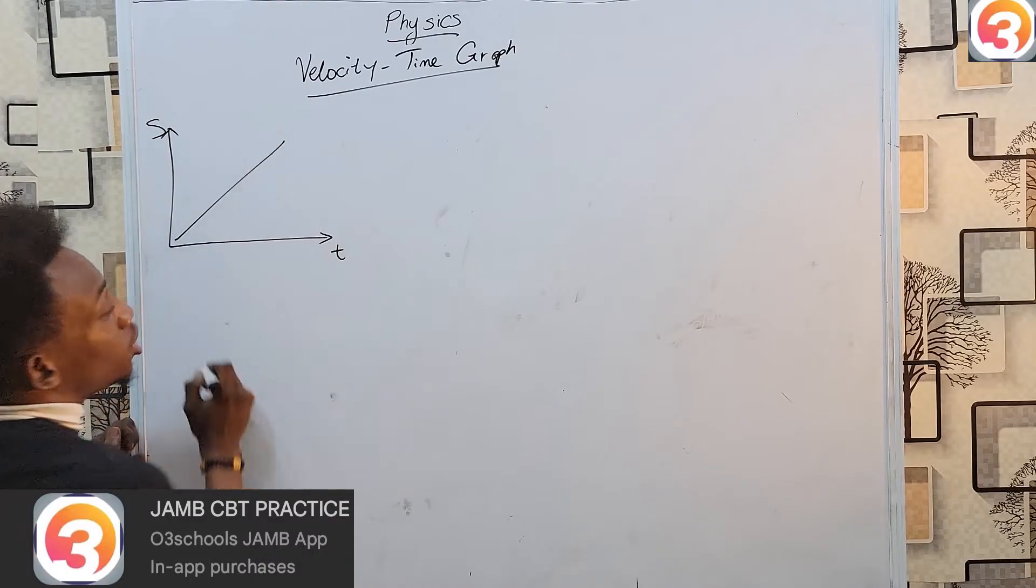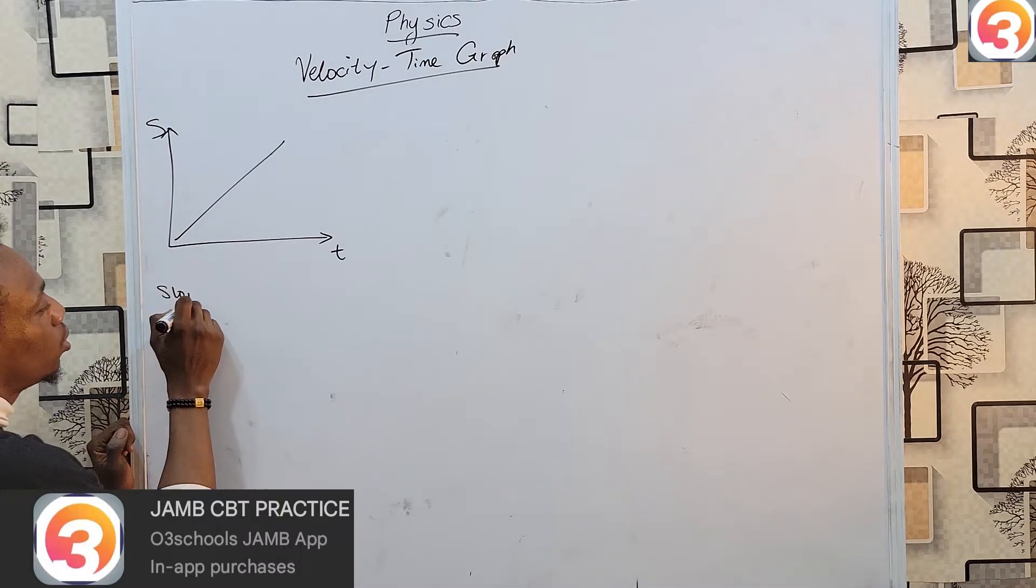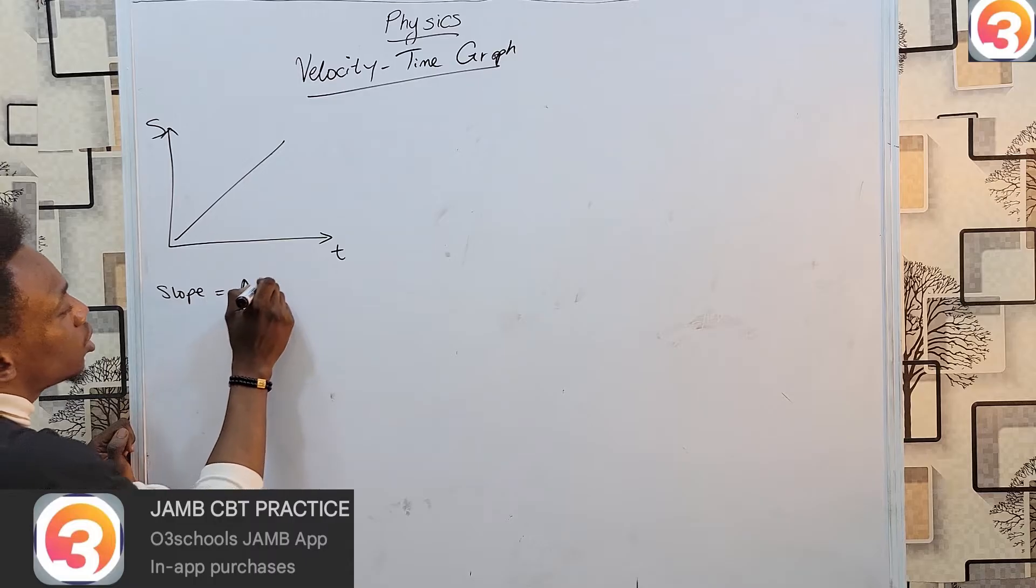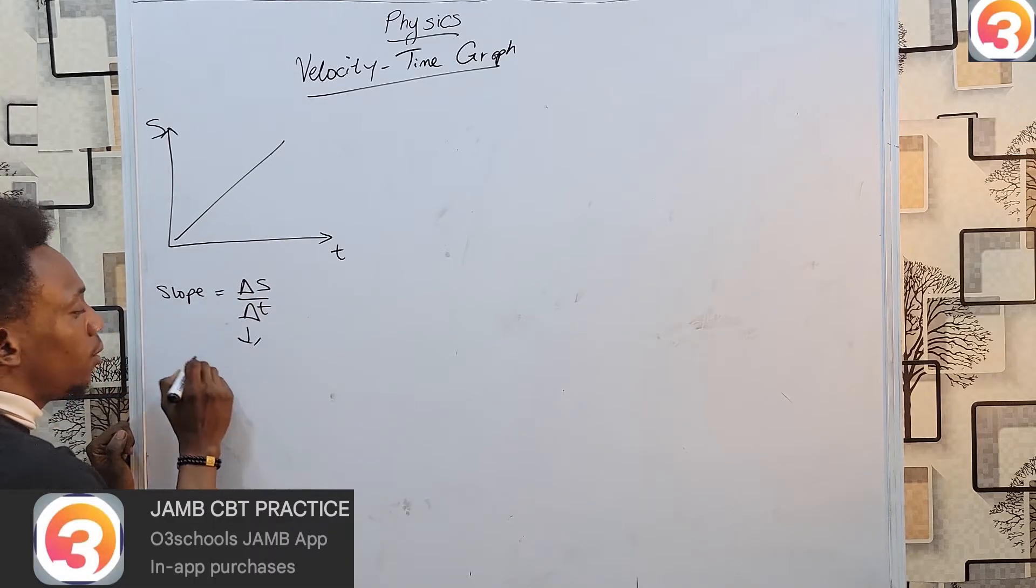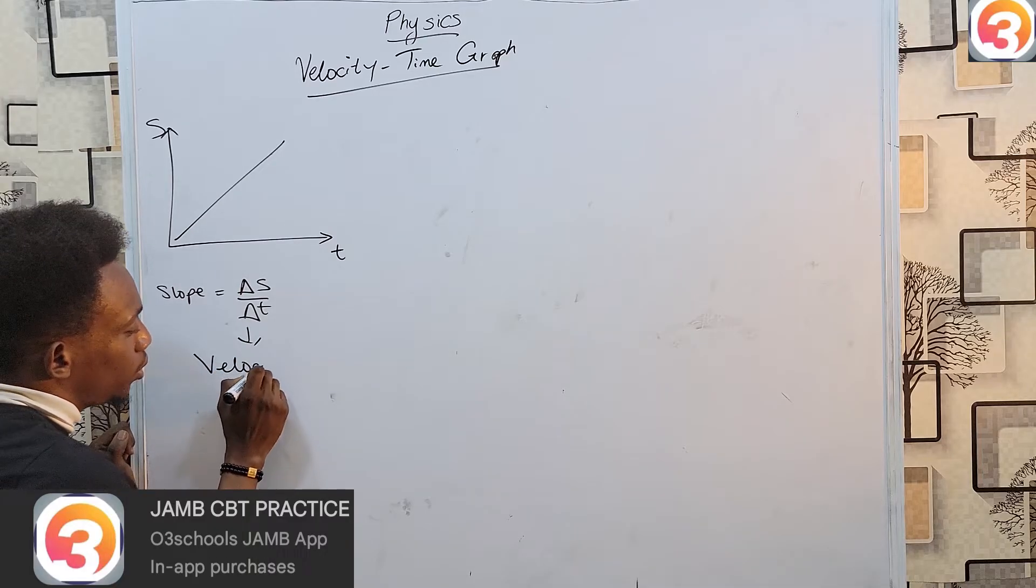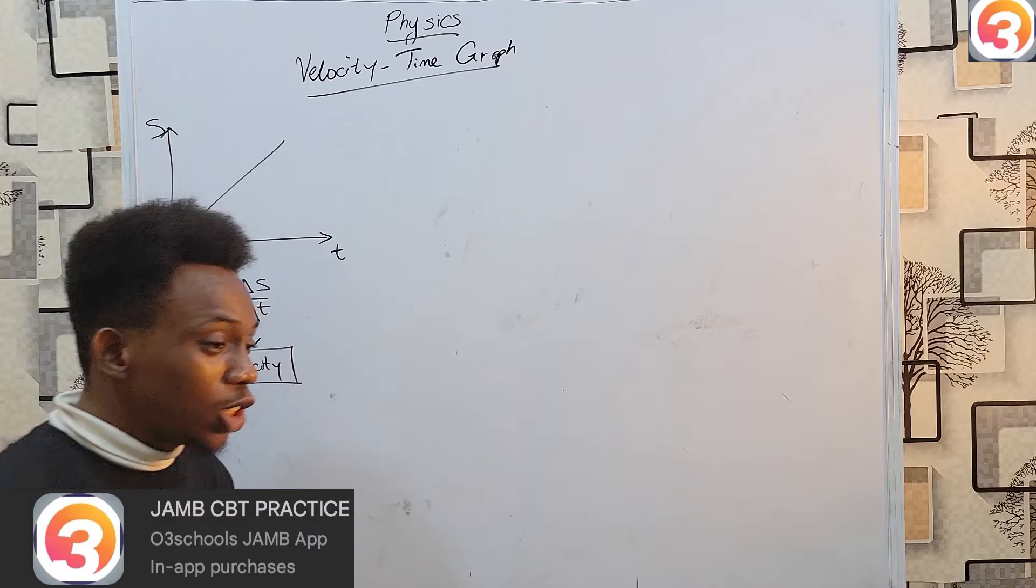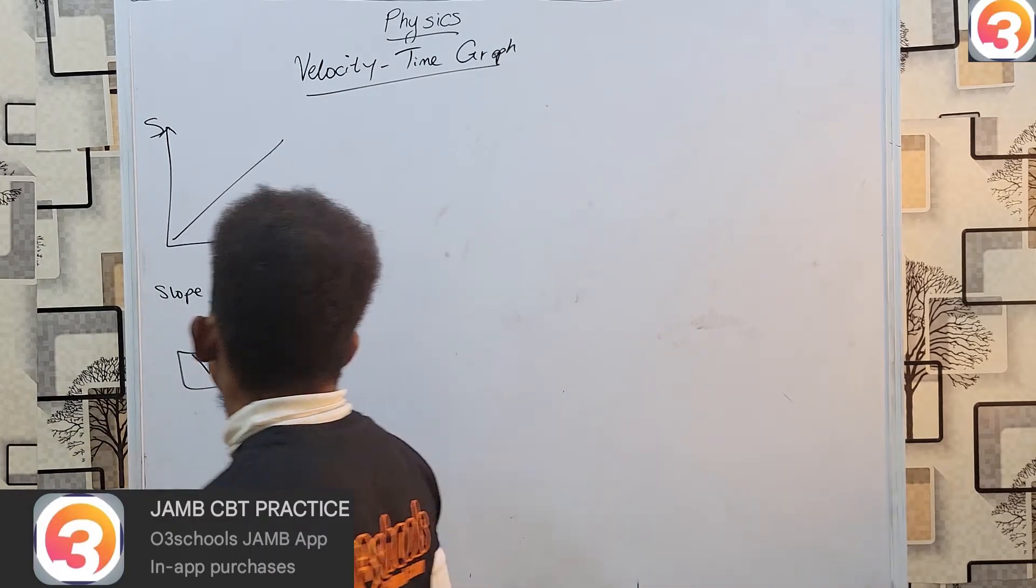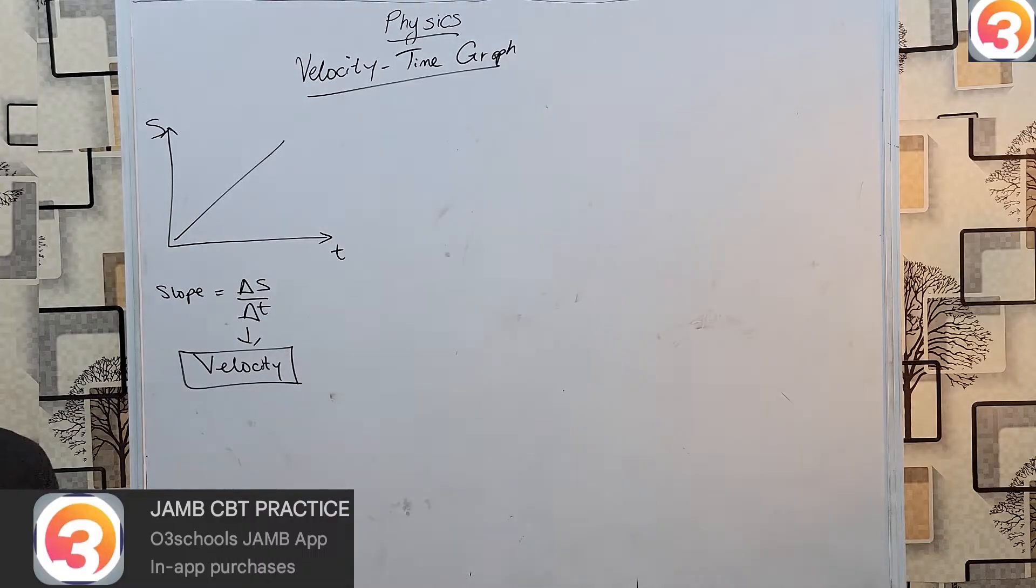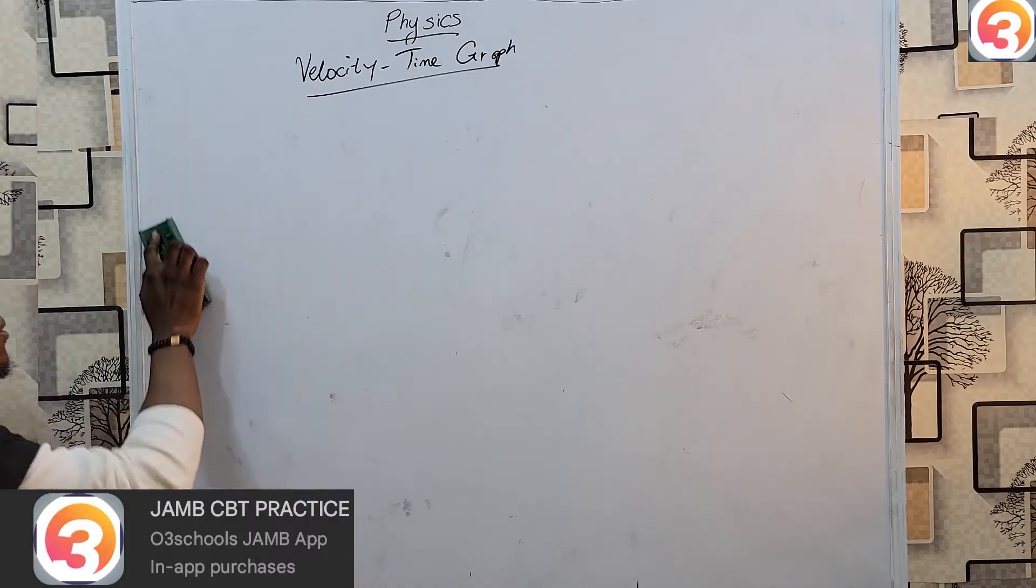For a displacement time graph, the slope of this graph, which is change in s by change in t, actually gives you the velocity of this object. So, with displacement time graph, the slope actually gives you your velocity. For that, we are focusing in this class on your velocity time graph.